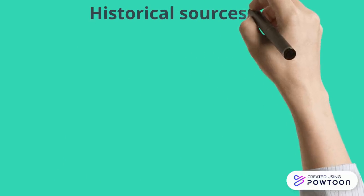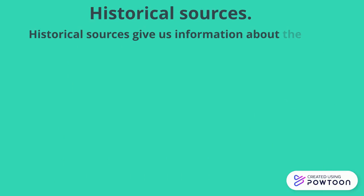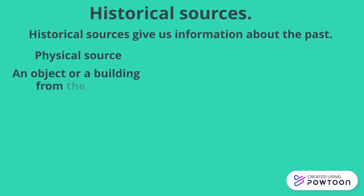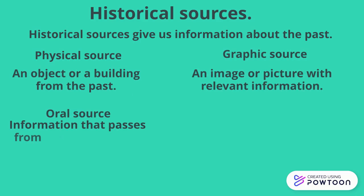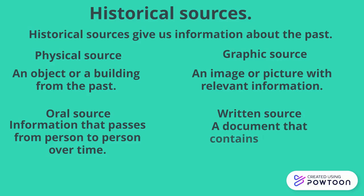Historical sources give us information about the past. A physical source is an object or a building from the past. A graphic source is an image or picture with relevant information. An oral source is information that passes from person to person over time. And a written source is a document that contains text or a written message.